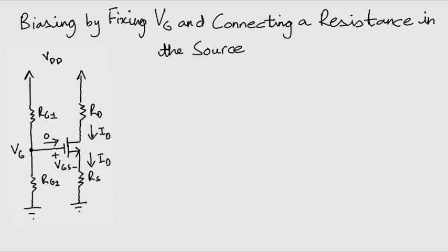For this circuit we can write VG equals VGS plus RS times ID. So what does this resistance RS do? It provides negative feedback which acts to stabilize the value of the bias current in the drain, ID.